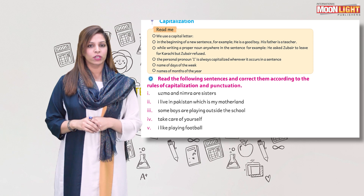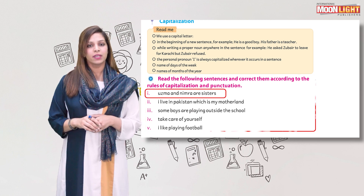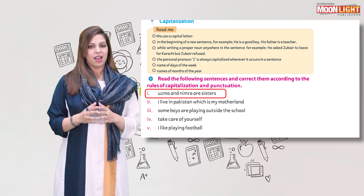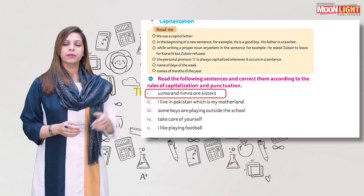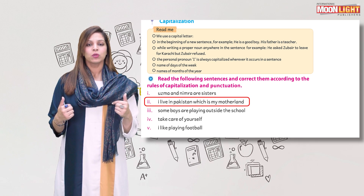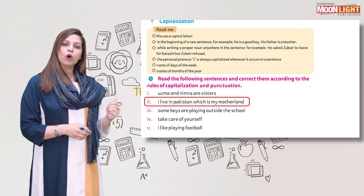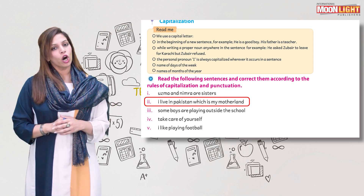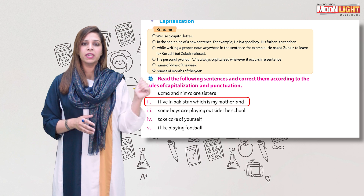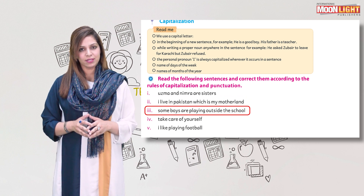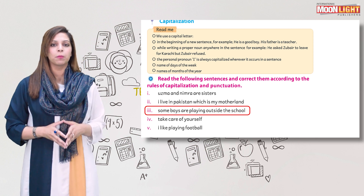Now it's time to show your understanding about capitalization. You have been given some sentences to correct using the rules of capitalization. Number one: 'Uzma and Nimra are sisters.' As Uzma and Nimra are proper nouns, we make U capital in Uzma and N capital in Nimra. Number two: 'I live in Pakistan which is my motherland.' I is capitalized because the pronoun I is always capital, and also because it is the start of the sentence. Pakistan is a proper noun, so P is capitalized. Number three: 'Some boys are playing outside the school.' This sentence starts with 'some', so S will be capital. There is no proper noun in this sentence, so the rest remains the same.